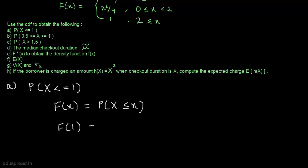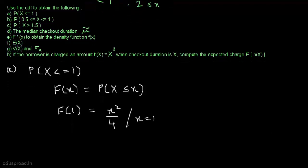F(1) is equal to x squared divided by 4, because this is the value of F of X for values of X between 0 and 2. So it is equal to 1 squared divided by 4, which equals 1/4 = 0.25. Therefore, the probability that X is less than or equal to 1 is 0.25.